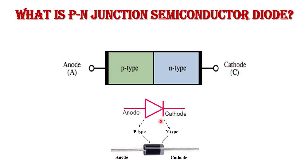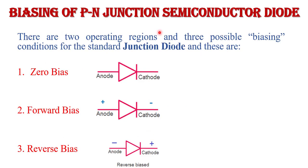This is the actual view of the PN junction diode. On the right-hand side, a strip is given which indicates the N side, and the cathode terminal is connected to the N side region. The other side is P side and the anode terminal is connected across the P side. Now, regarding the biasing of PN junction semiconductor diode — what is biasing and why is biasing required?